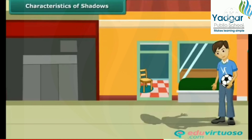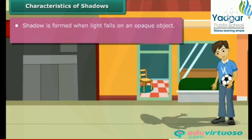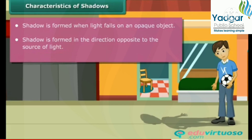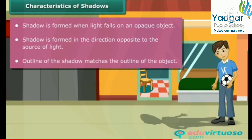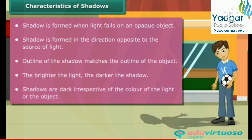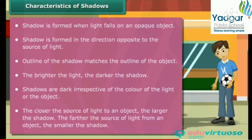You just learned some interesting facts about shadows. Let us list the important characteristics of shadows. Shadow is formed when light falls on an opaque object. Shadow is formed in the direction opposite to the source of light. The outline of the shadow matches the outline of the object. The brighter the light, the darker the shadow. Shadows are dark irrespective of the color of the light or the object. The closer the source of light to an object, the larger the shadow. The farther the source of light from an object, the smaller the shadow.